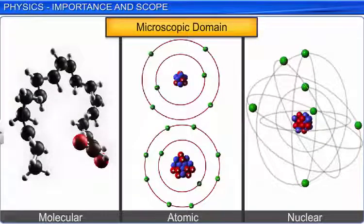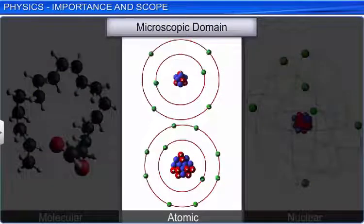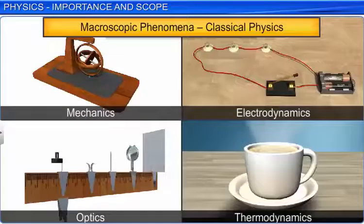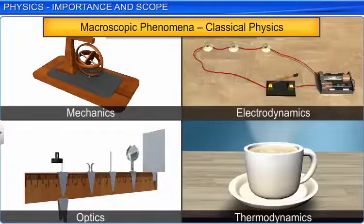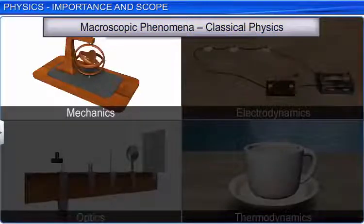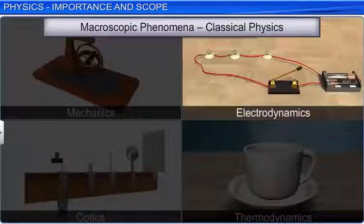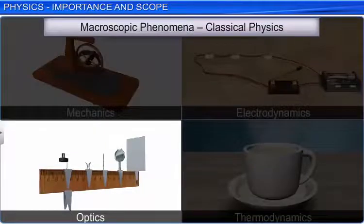Whereas, the microscopic domain deals with molecular, atomic and nuclear phenomena. In our study of physics, we will look at macroscopic phenomena under classical physics that includes mechanics, electrodynamics, optics and thermodynamics.